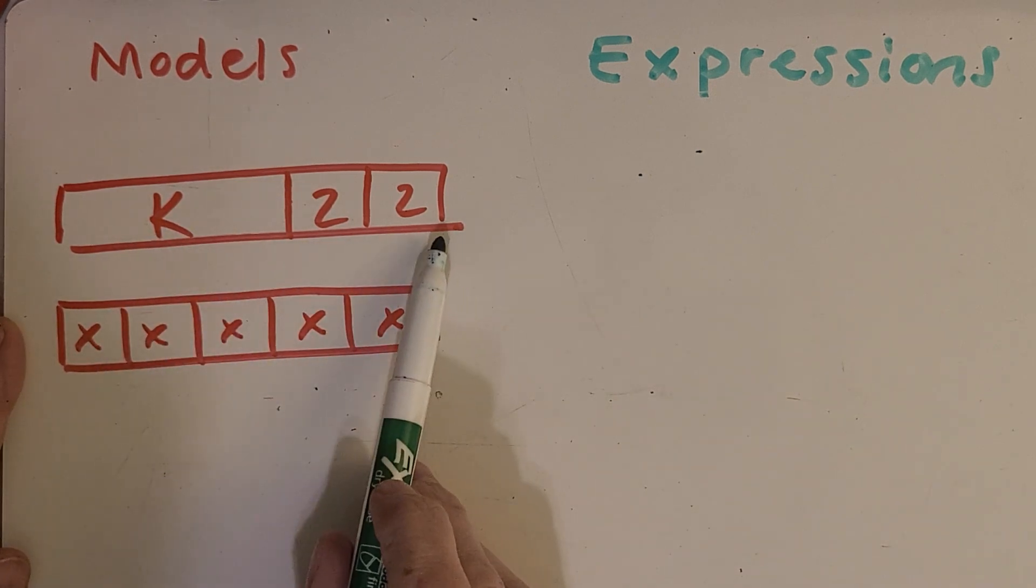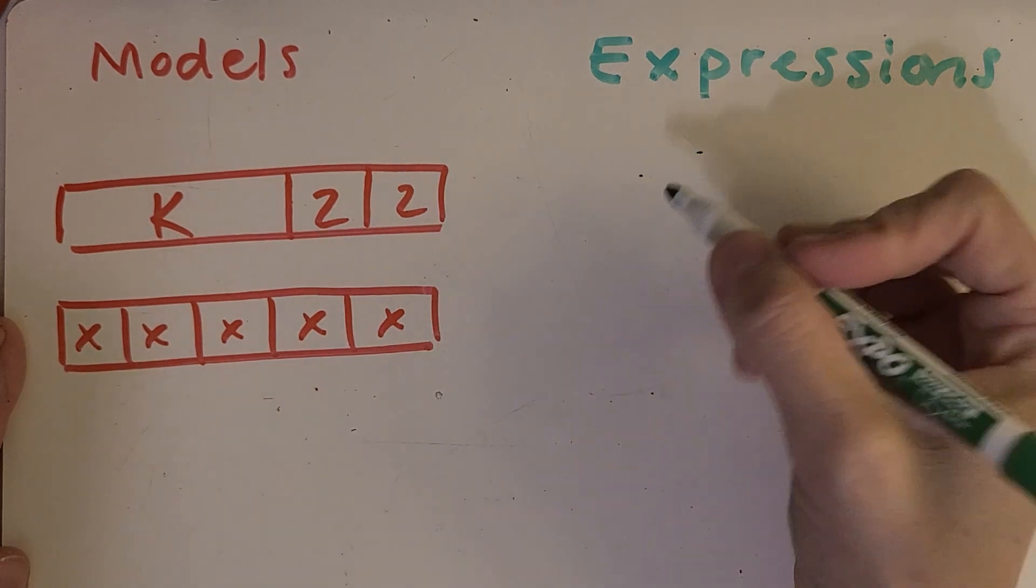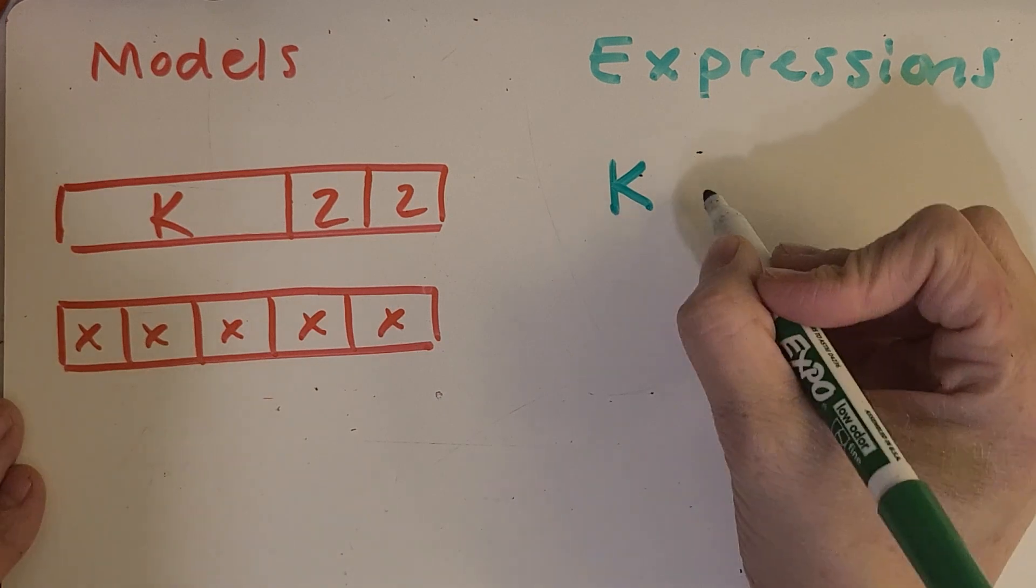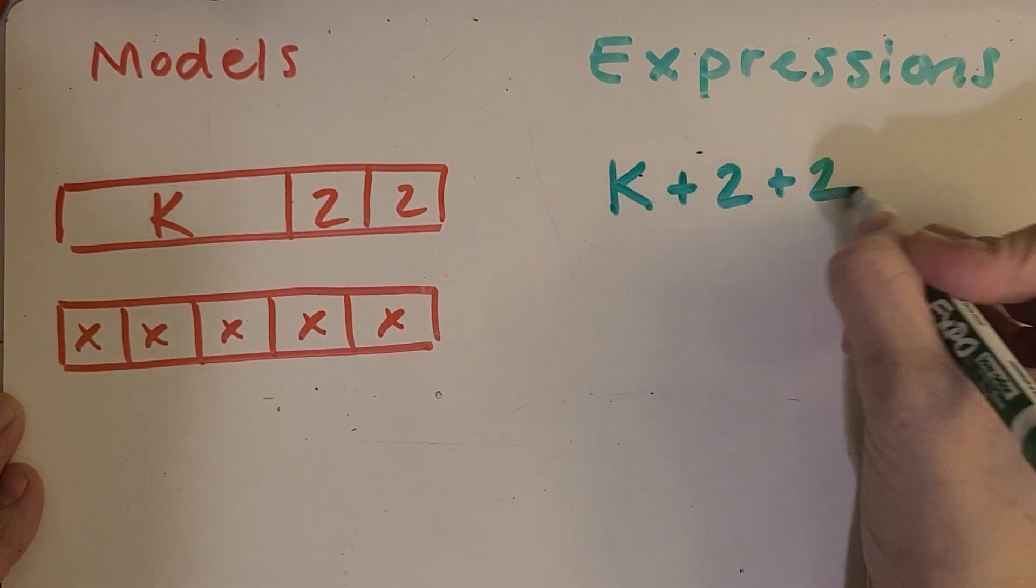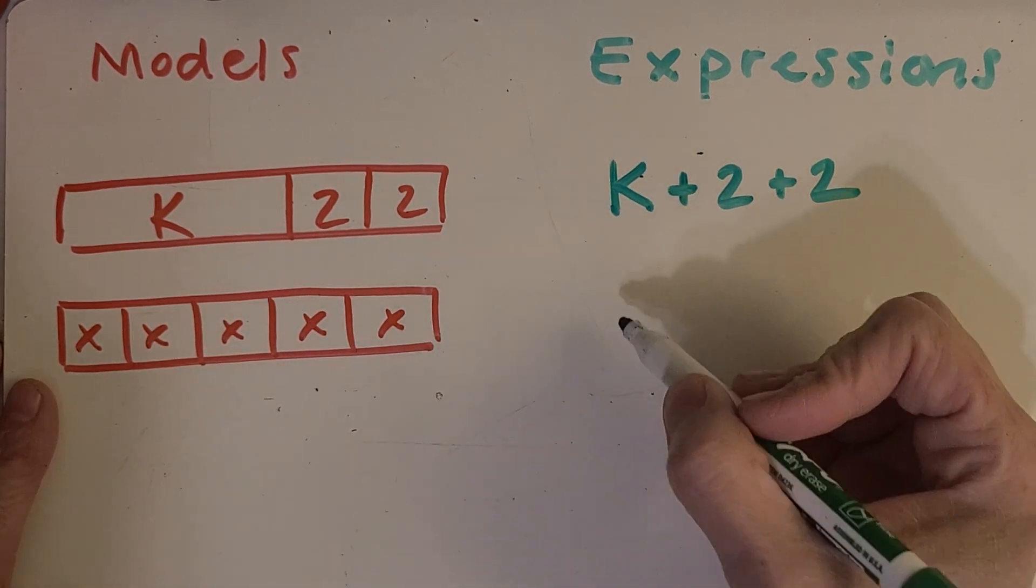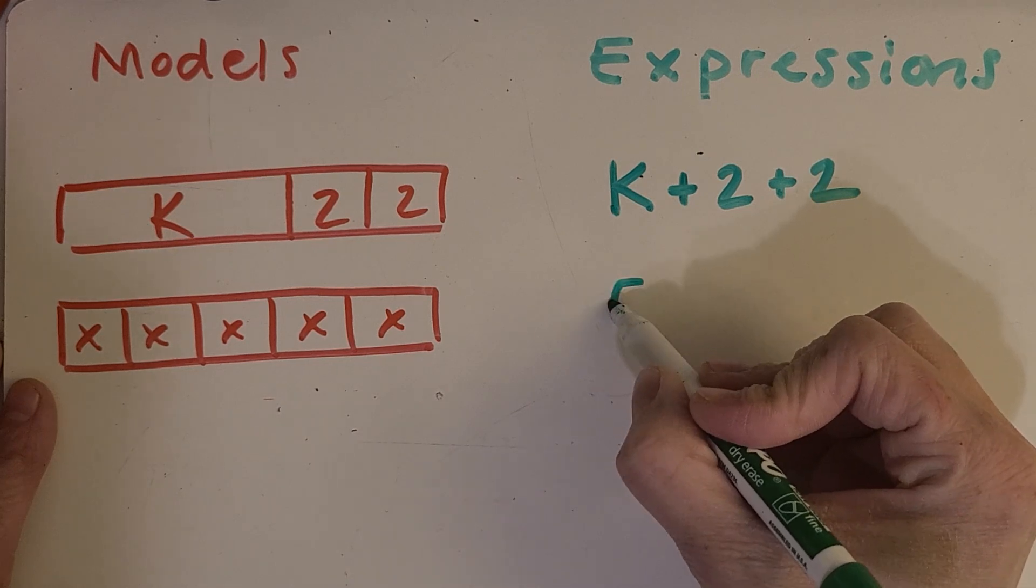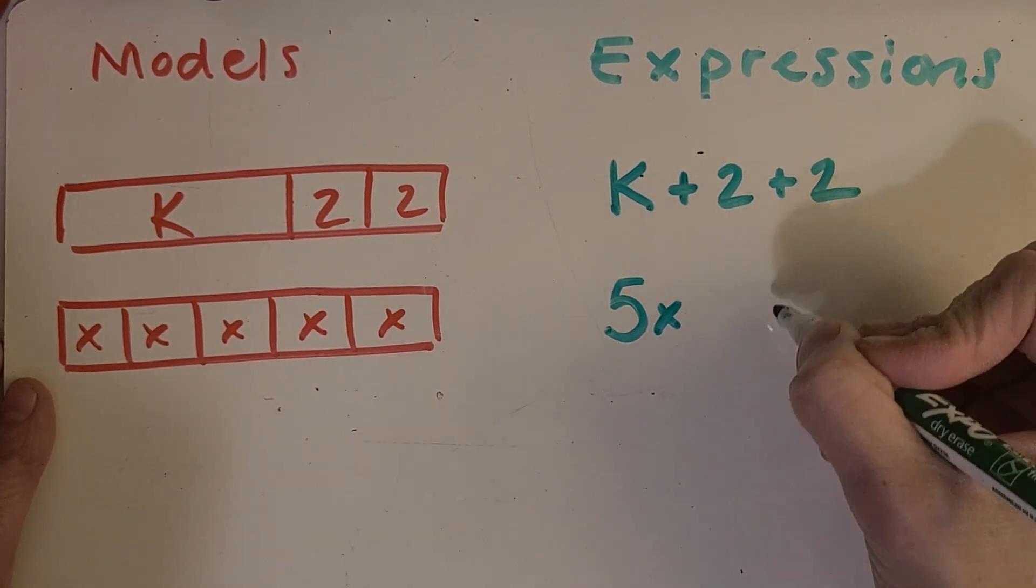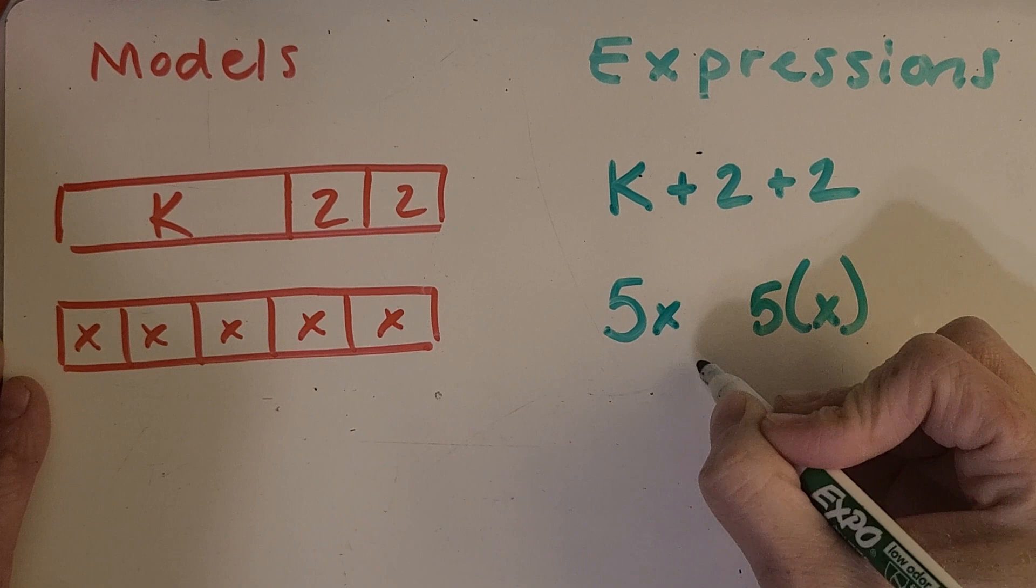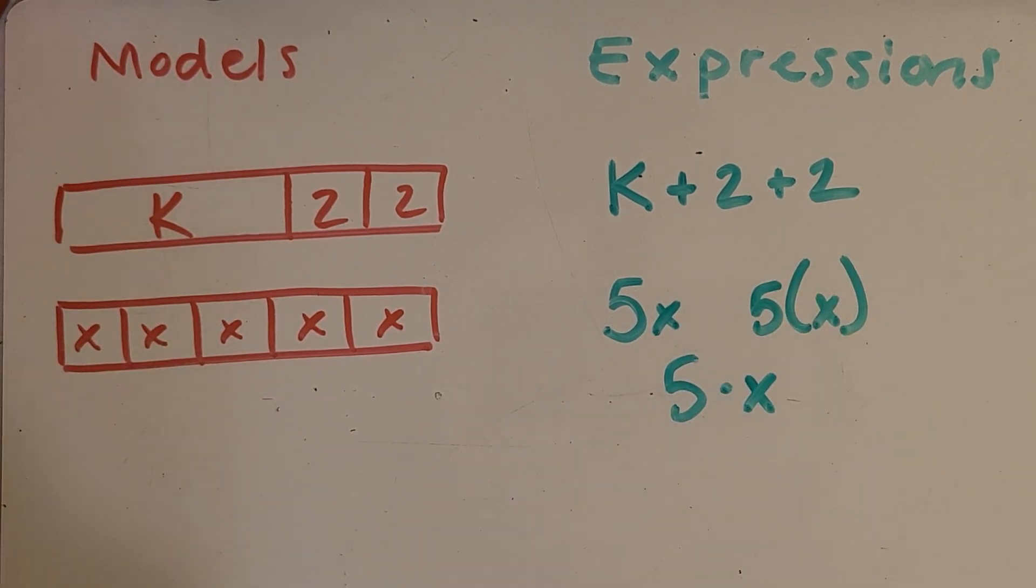Okay, so for this one, I'm noticing it's similar to the addition problem we started with. So, this looks like we're just finding the total of this strip. So, K plus two plus two. And then this one looks like each group is that same unknown amount. So, it looks like multiplication to me. And there are five parts. So, we could write it as five X. We could write it as five and then put the X in parentheses. We could use that dot. Any of those will work. Okay, great job.